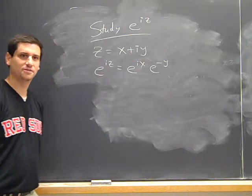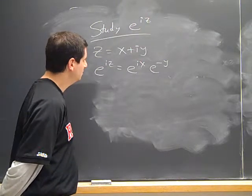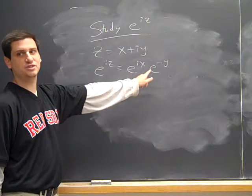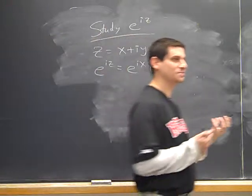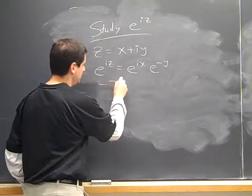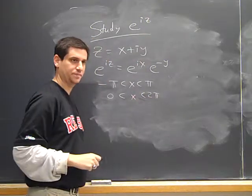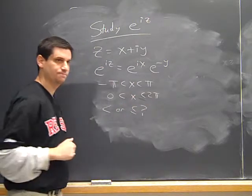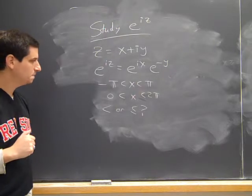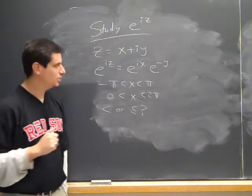Maybe I take −π < x < π, or 0 < x < 2π — something like that. The question is less-than or less-than-or-equal-to. We want an open set, so maybe I take two strict inequalities, or one of them is less-than-or-equal-to. We'll have to think about this in a moment.